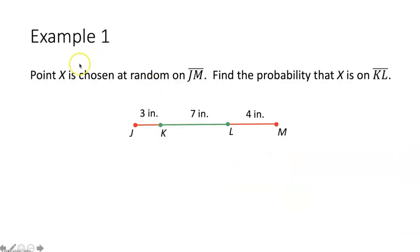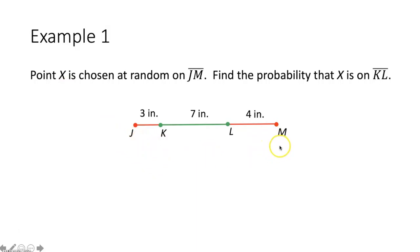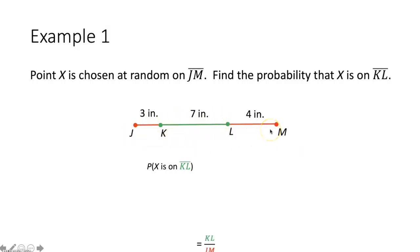Example one: point X is chosen at random on segment JM. Find the probability that X is on segment KL. We are given a larger line segment JM, and on that larger segment a smaller segment KL. We're choosing a point at random on segment JM — we'll call that point X. To determine the probability, we use the length probability ratio, which says we take the measure of segment KL and put it over the measure of segment JM.